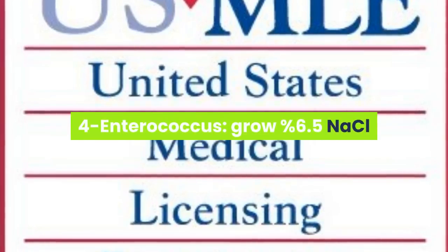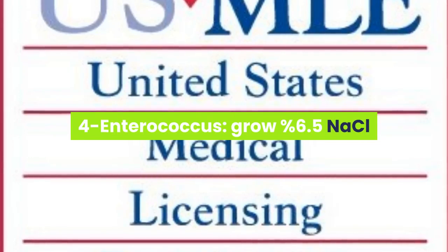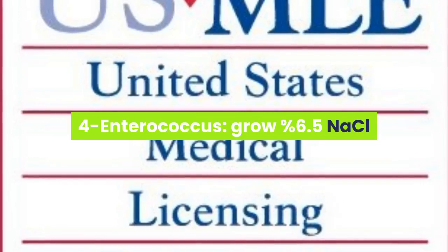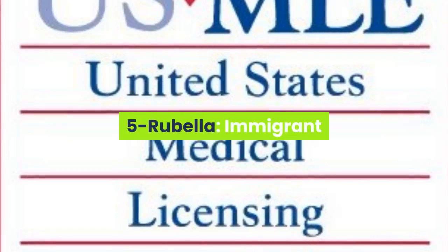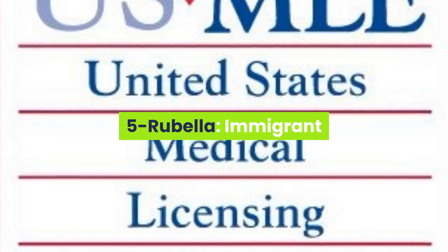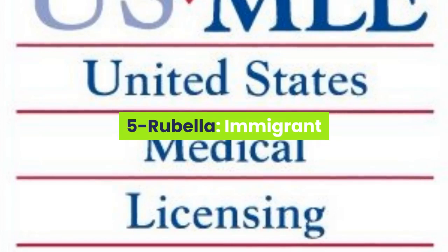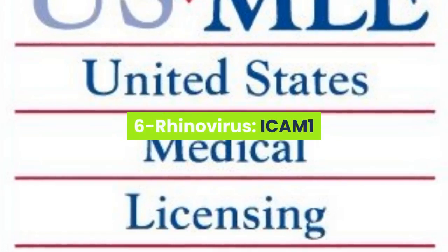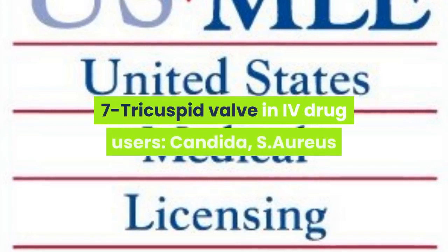Enterococcus is a bacteria that generally grows on 6.5% sodium chloride. Rubella is a disease generally seen in immigrant children because they did not get proper vaccination.